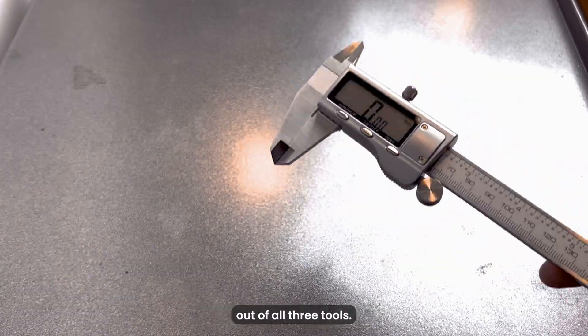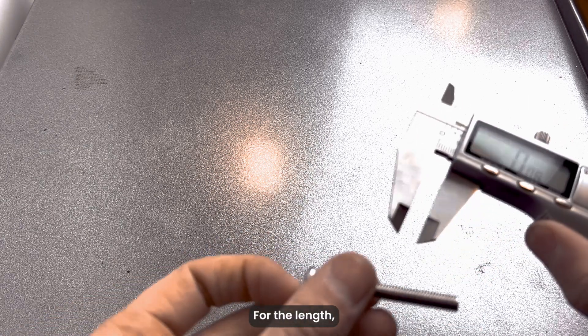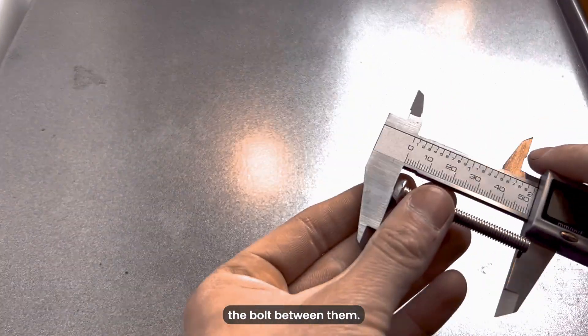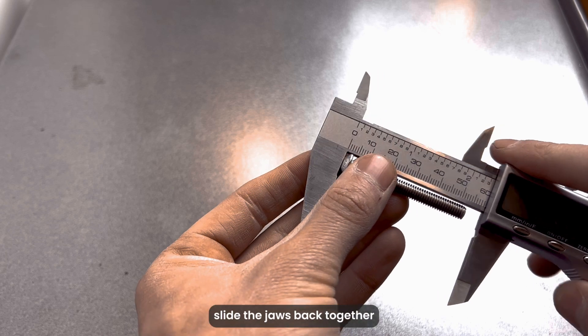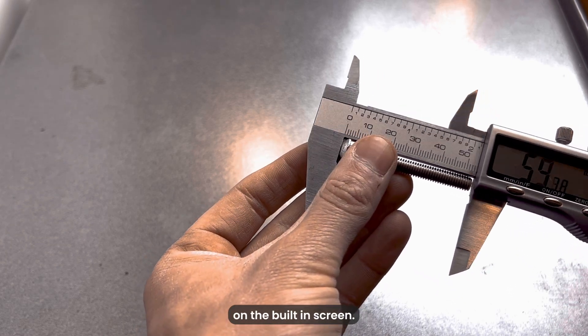For the length, slide open the jaws and position the bolt between them. Once in place, slide the jaws back together and look at the reading on the built-in screen.